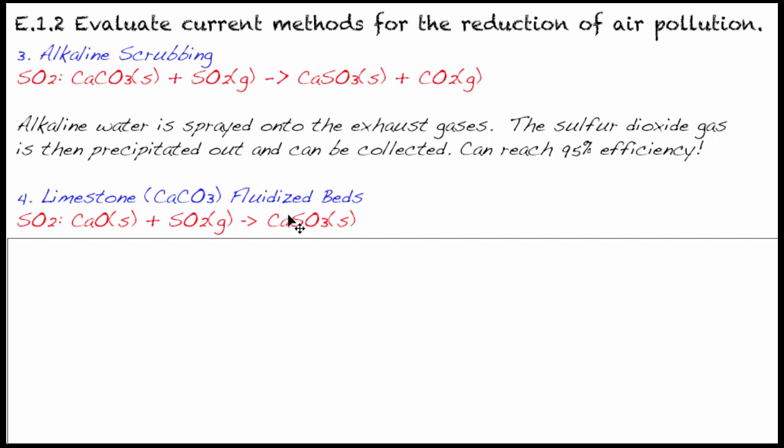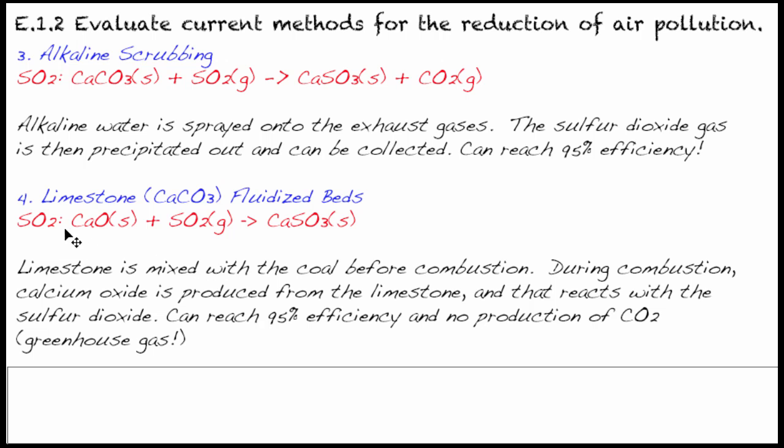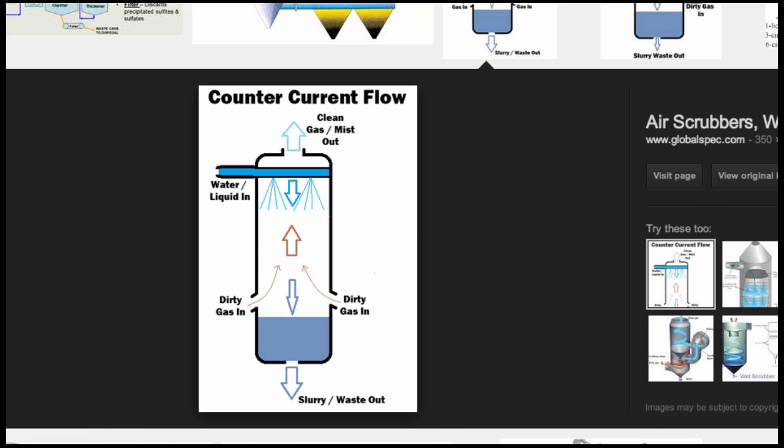Also related to that, and both of these are very much related to power generation, especially in coal, we're going to modify it slightly. It's still with SO2, but instead of calcium carbonate, we're going to look at a reaction with calcium oxide. Calcium oxide is going to react with the gaseous SO2 and produce the same precipitate as the previous one, alkaline scrubbing. The only difference, which is very major, is that you can see there's no CO2 produced. Limestone is mixed with the coal before combustion. During combustion, calcium oxide is produced from the limestone, and that reacts with the sulfur dioxide. That can be collected as a precipitate and can reach 95% efficiency, but also reduces CO2.